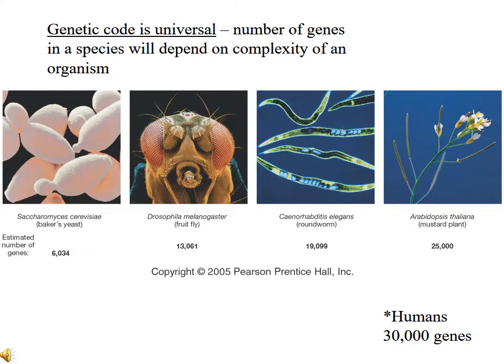Therefore, the human will produce approximately 30,000 different proteins. Now this does not mean that every cell is producing 30,000 proteins — it just means that the potential is there for the production of 30,000 proteins. Every cell, however, will produce only the proteins necessary to maintain the viability of that particular cell.